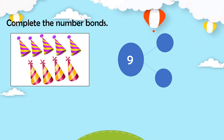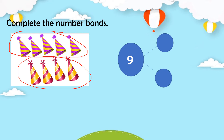Another example — look at the objects and complete the number bond. We can break the group based on the color of each part, or we can draw a line to split the objects into two groups. After drawing the line, count the number of objects in each group. We have five and four. These numbers are the parts of the number bond, so we write five and four at the bottom. Five plus four equals nine.